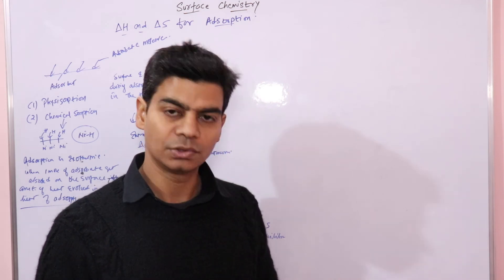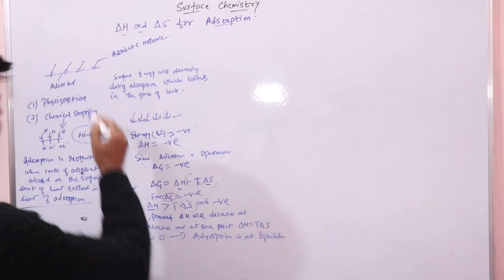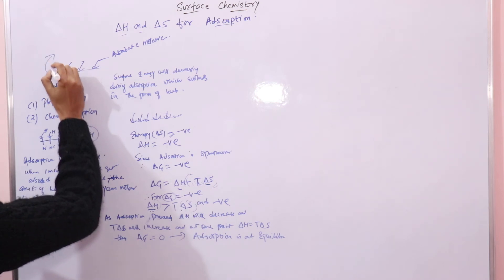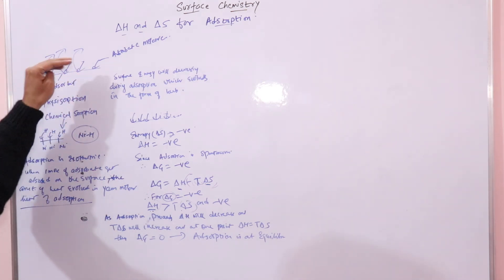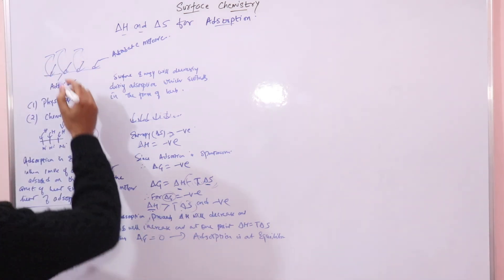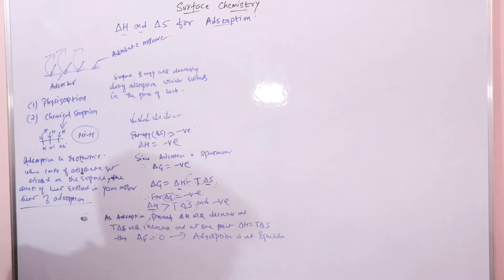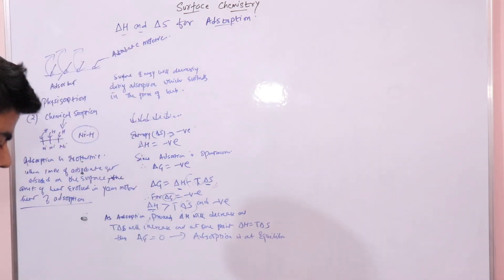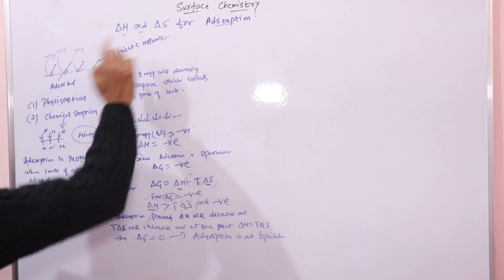When ΔG equals zero, adsorption is at equilibrium, meaning adsorption is no longer progressing. At equilibrium, the rate of adsorption of gas onto the metal surface equals the rate of desorption — the rate at which gas leaves the surface. Therefore, the rate of adsorption equals the rate of desorption.